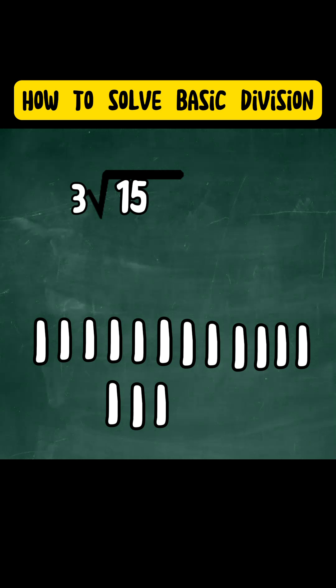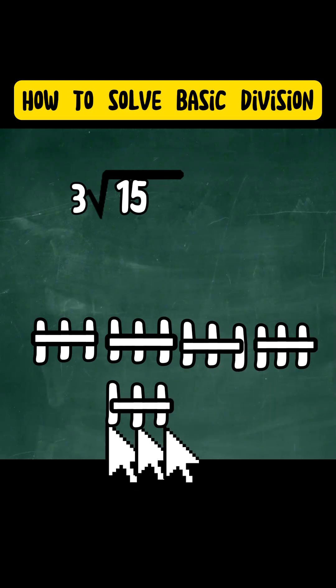Now we cross out by 3. So 1, 2, 3 cross out. 1, 2, 3 cross out. 1, 2, 3. 1, 2, 3. 1, 2, 3 cross out.